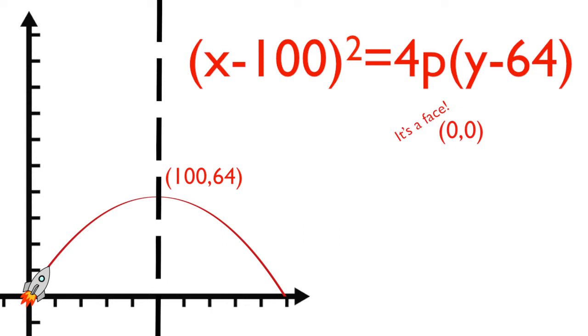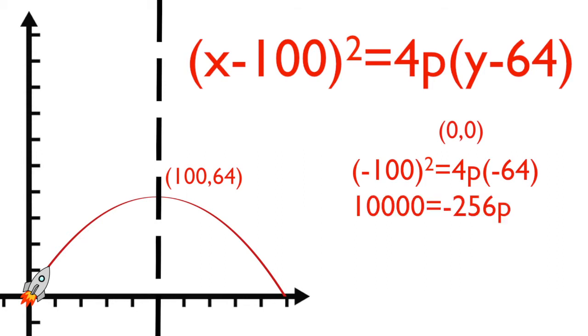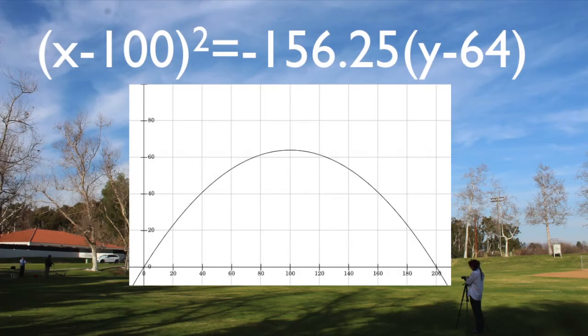Plugging in the point 0,0 gives us negative 100 squared equals 4p negative 64. Solving for p then gives negative 39. Quickly replacing p with negative 39 gives us our final parabola equation, x minus 100 squared equals negative 156 and a quarter y minus 64.